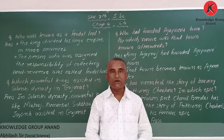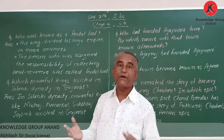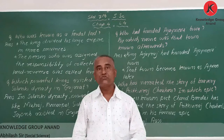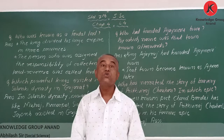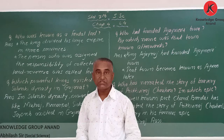Next question: which were the powerful kings of the Solanki dynasty in Gujarat? During the Rajput age — from the 7th to the 12th–13th century — Rajput rulers were present in Gujarat. The most powerful rulers of the Solanki dynasty were Mulraj Solanki, Siddharaj Jayasinh, and Kumarpal.